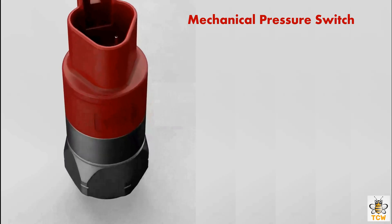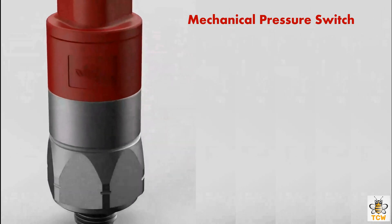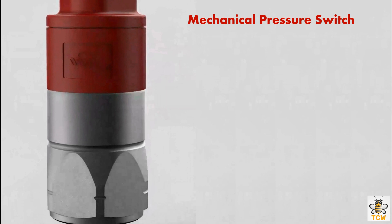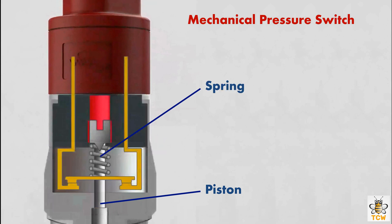The mechanical pressure switch works by applying mechanical principles. The main components in a mechanical pressure switch are a piston, a spring, and the contact surfaces of the switch.